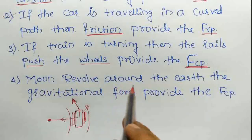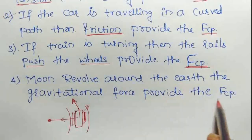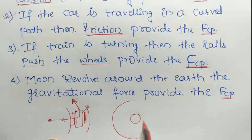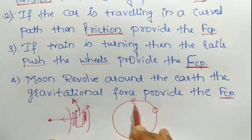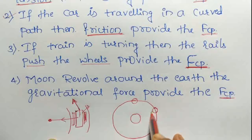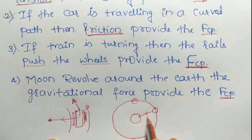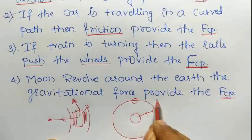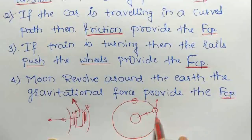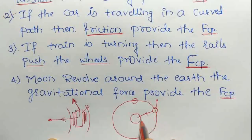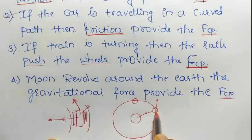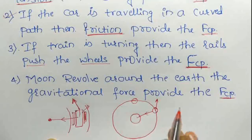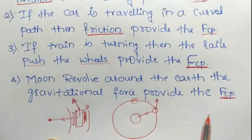Fourth example: the moon revolves around the Earth. The gravitational force between the Earth and the moon provides the centripetal force, so the moon does not move away and continues to revolve around the Earth.